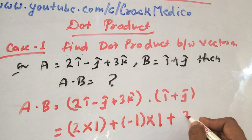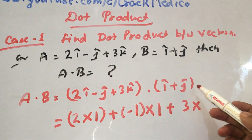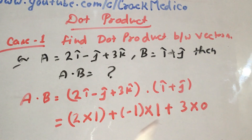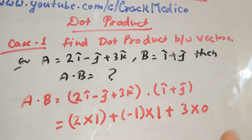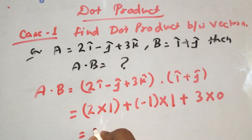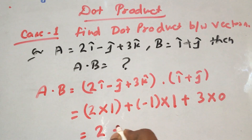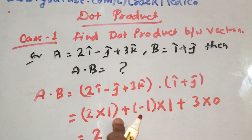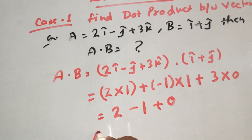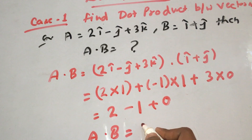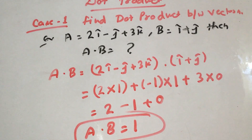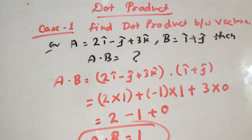The coefficient of k in the first vector is 3, and the coefficient of k in the second vector is 0 because k is not available there. So that gives 3 into 0 equals 0. So the total is 2 plus 1 plus 0, which equals 3. Wait — 2 into 1 is 2, plus 1, minus 1 equals 1, plus 0 equals 1. So A·B equals 1.